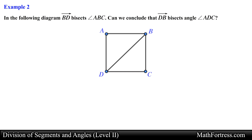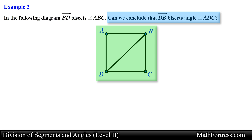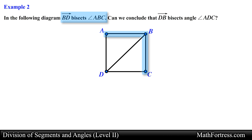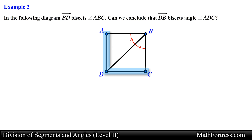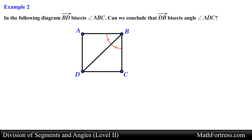Alright, let's try the next example. In the following diagram, ray BD bisects angle ABC. Can we conclude that ray DB bisects angle ADC? In this problem we are provided with a figure and are asked to determine if a ray bisects an angle. We are given that ray BD bisects angle ABC, which means that ray BD will split angle ABC into two congruent angles. In this case, angle ABD is congruent to angle CBD. Now, just because it looks like ray DB is a bisector of angle ADC does not mean that it is — we cannot assume this from the diagram.